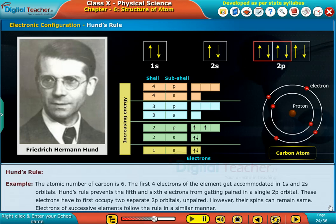Hund's rule prevents the fifth and sixth electrons from getting paired in a single 2p orbital. These electrons have to first occupy two separate 2p orbitals unpaired. However, their spins can remain the same. Electrons of successive elements follow the rule in a similar manner.